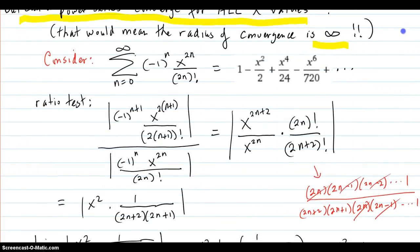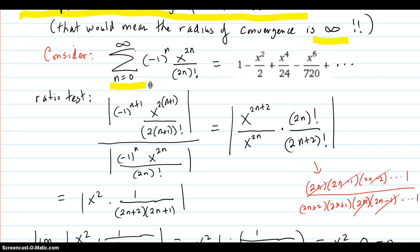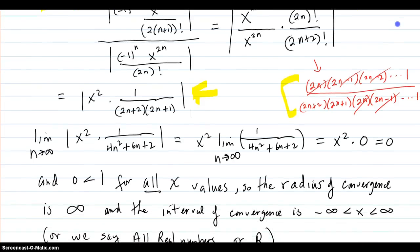So here's an example. This nice power series right here. It expands out looking like this. We'll do the ratio test. Divide, simplify it out. This is how this got to be the next step here.